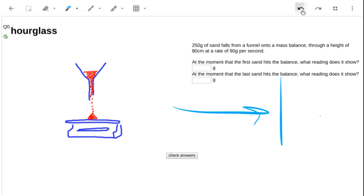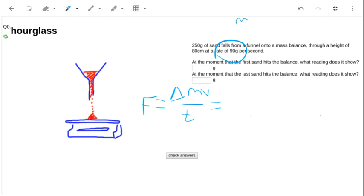So the equation that we need here is this one, which is Newton's second law. We can choose the time, and in fact in this case we should choose the time to be one second, because we've got a mass per second, this is an m over t here.